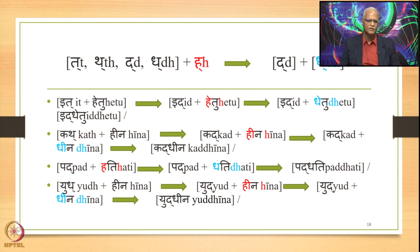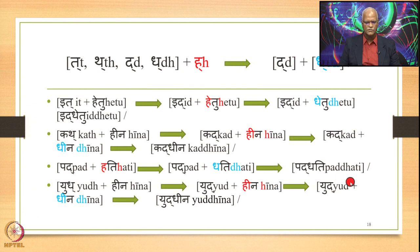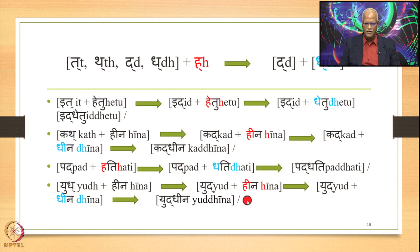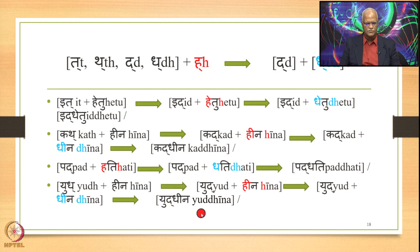Then we have Pad plus Hati: H is substituted by the Purva Savarna of Da by the application of Jhayohonyatarasyam, generating Pad plus Dhaeti — Pad Dhati, optionally Pad Hati. Then Yudh plus Hena: Dha is first substituted by Da by Jhalam Jashonte, giving Yudh plus Hena; then H is substituted by Dha, generating Yudh plus Dheena — Yudh Dheena, optionally Yudh Hena.